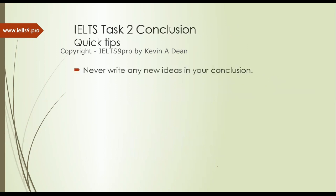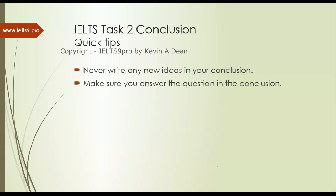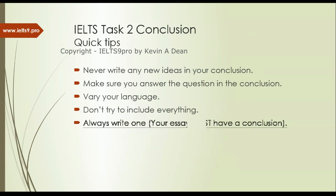A couple of tips. People still keep on adding new information in their conclusions. You read the essay, get to the conclusion, and there's something like 'additionally' — something new that was not mentioned. Don't do it. A conclusion is meant to be a summary of your main points. Make sure you answer the question, vary your language, paraphrase. Don't try to include everything, just your main ideas, and you always have to have one. You must have a conclusion, otherwise it's not an essay.